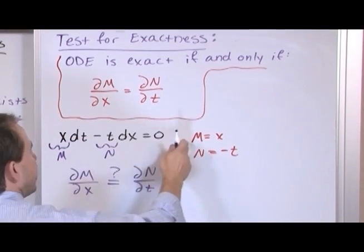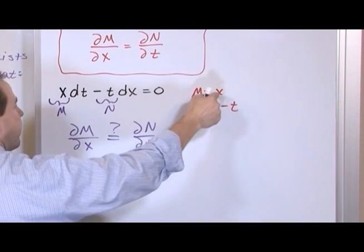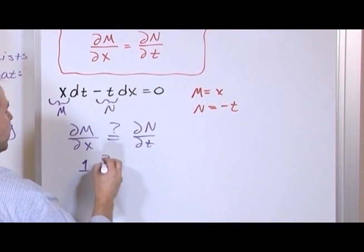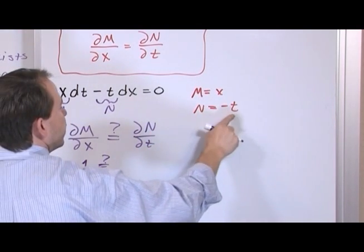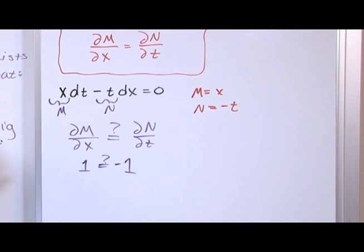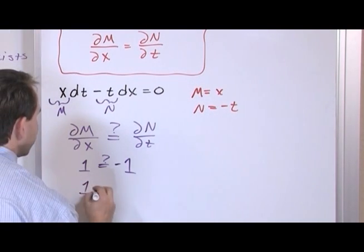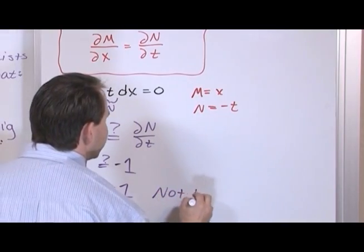Now what is the partial derivative of m with respect to x? That's just going to be 1. This guy right here with respect to x. Equal question mark. Partial derivative of n with respect to t. This is n with respect to t is negative 1. Are these two guys equal? The answer is no. So because 1 is not equal to negative 1, this is not exact.